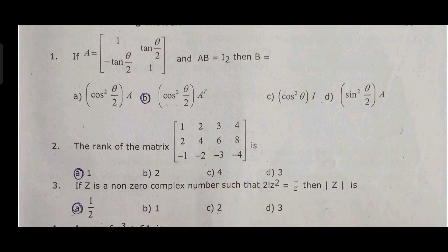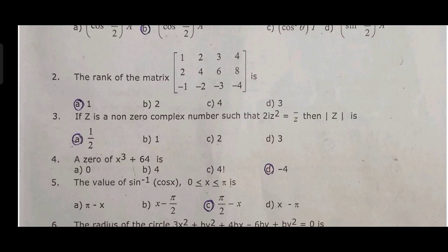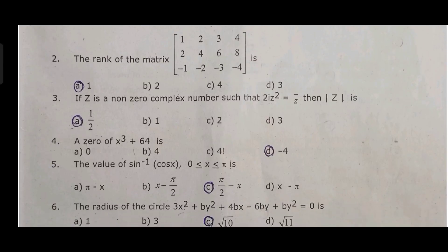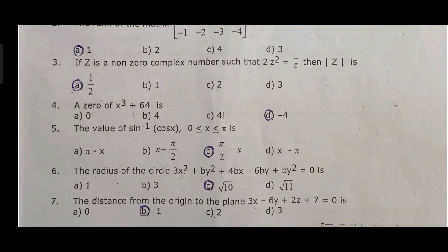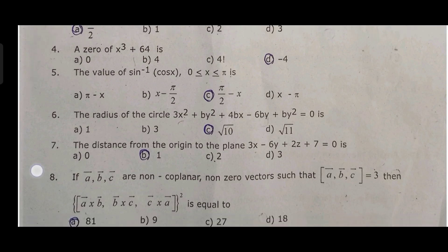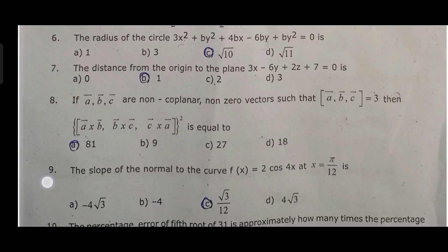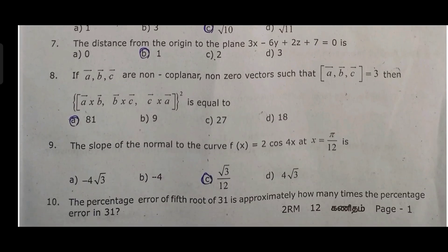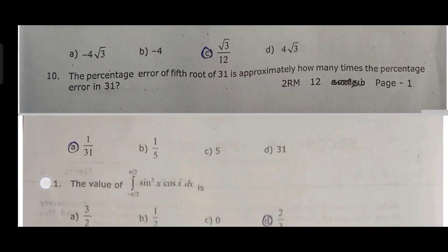First, B option. Second, A option is 1. Third, A option is 1 by 2. Fourth, D minus 4. Fifth, C option is 5 by 2 minus x. Sixth, root 10, C option. Seventh, B, 1. Eighth, A option is 81. Ninth, C option is root 3 by 12. Tenth, A option is 1 by 31.